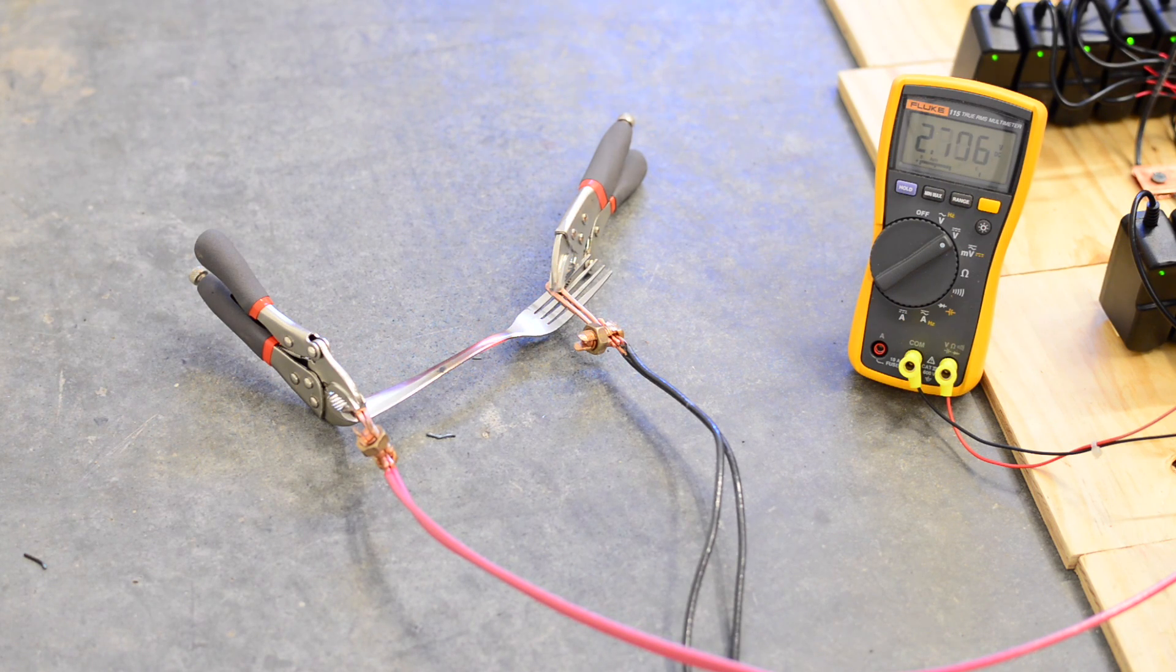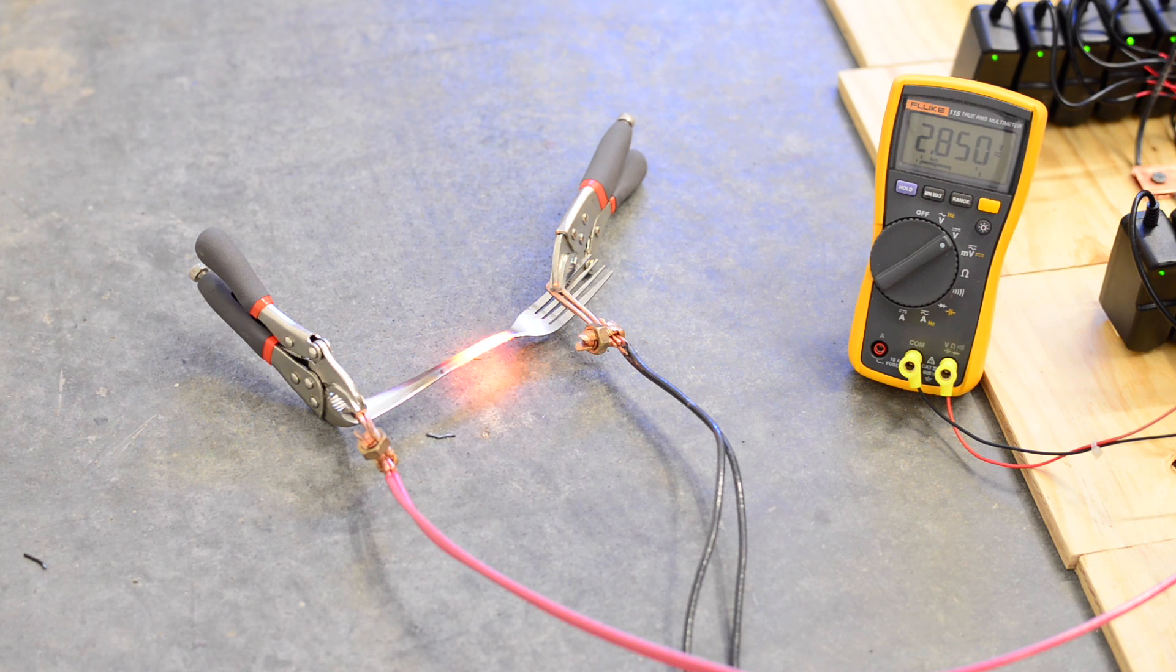The fork is about the perfect resistance to let the supplies operate near their intended operating points, and it glows continuously.